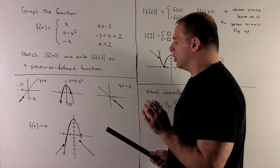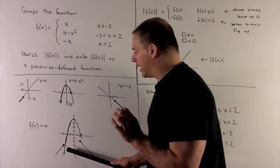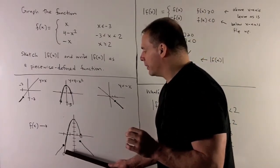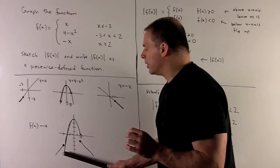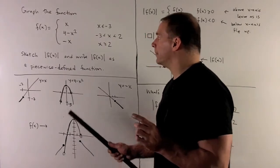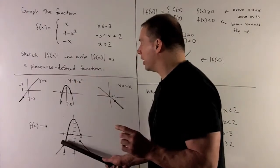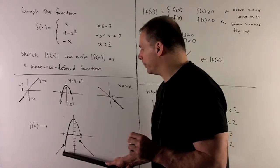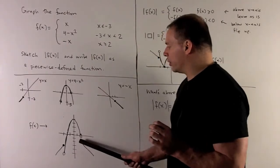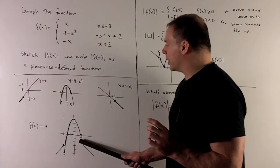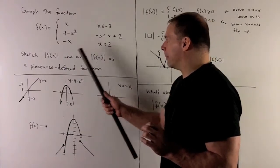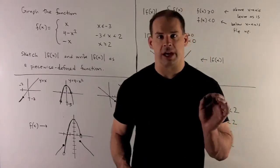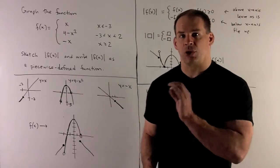Some things to note: at x equals minus 3, the line piece is above the parabola piece. The line gives minus 3 there, while 4 minus 9 equals minus 5, which is below. Similarly at x equals 2, putting 2 into minus x gives minus 2, so the parabola's endpoint has a y-value above that point. So that's the completed graph of f(x).